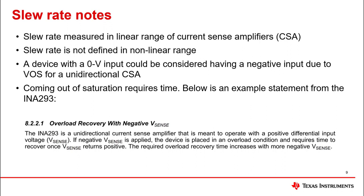Here are some additional notes to take into account when considering slew rate limitations. Slew rate is defined when operating in the linear range of the CSA. Slew rate is not defined in a nonlinear range of the CSA. When operating a unidirectional CSA and the input is 0 volts, the device could be in a nonlinear range due to swing low and VOS being negative. Recovering from this condition could require additional time as the CSA will require time to recover from the nonlinear input range.